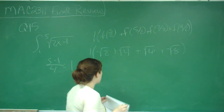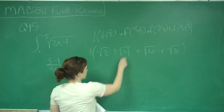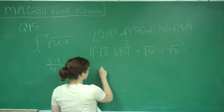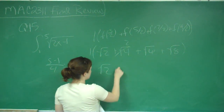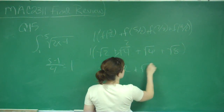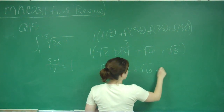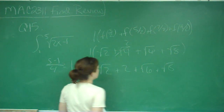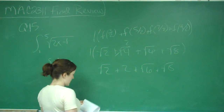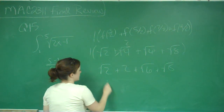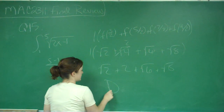So our answer should be — and we know that the square root of 4 is 2 — so it's the square root of 2 plus 2 plus the square root of 6 plus the square root of 8. And so that is your answer, and that is letter D.